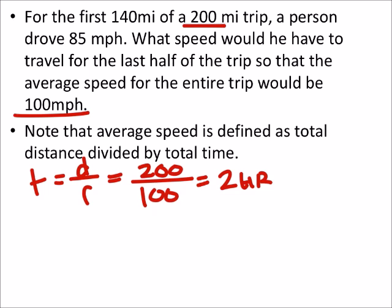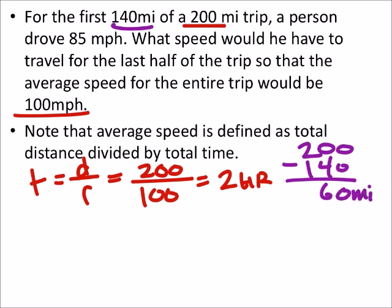Now what we have here is we've already completed 140 miles of the trip. So how much trip is left? So we're going to take this 200-mile trip. We've already taken 140 miles out of the trip, which leaves us with 60 miles remaining. And so in this two-hour trip, if we can figure out how much time remains, we can take that distance and divide it by the time, which would give us the rate.